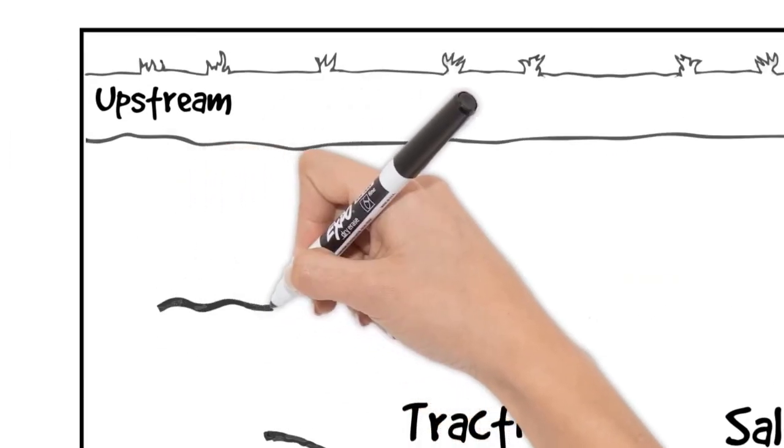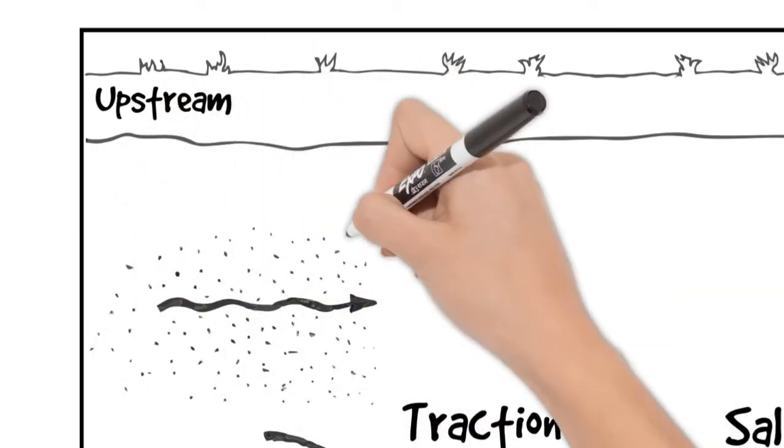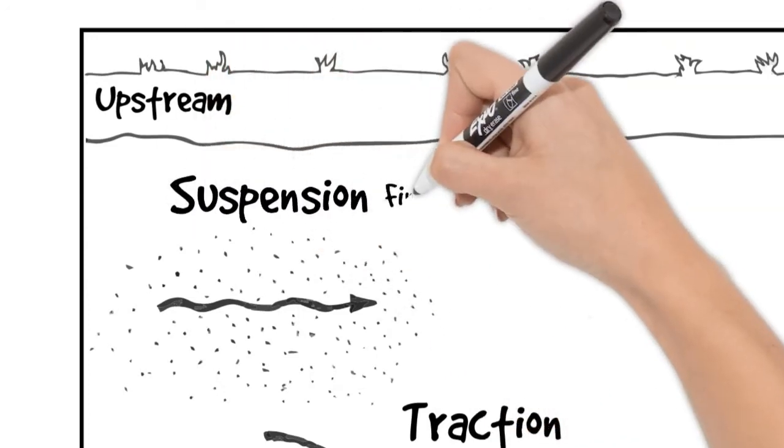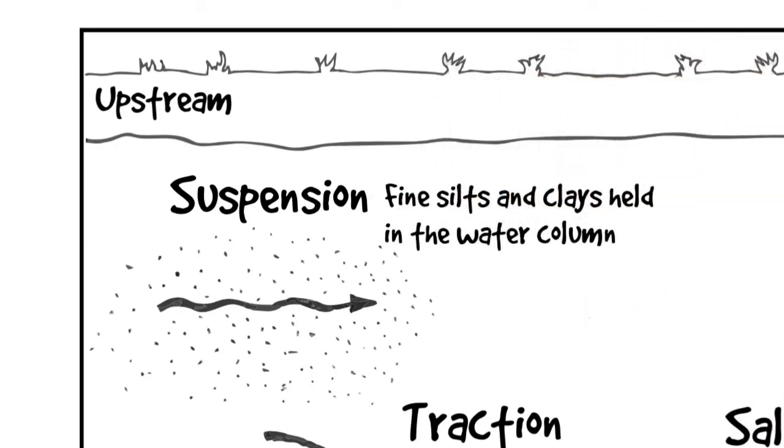Then we look at the suspended load, this is the fine silts and clays held in the water column. So these are very very small and the moving water carries them along, this is what makes a river look murky.